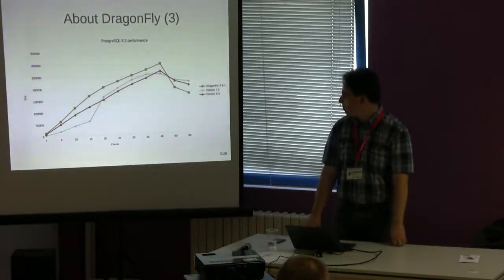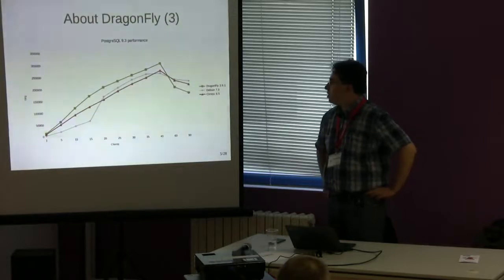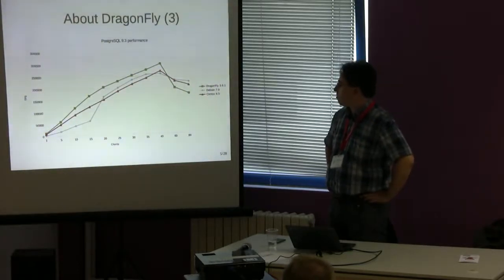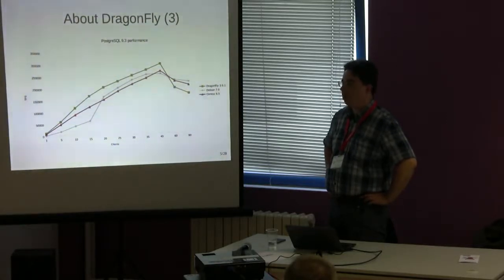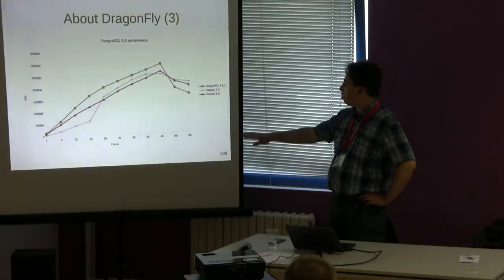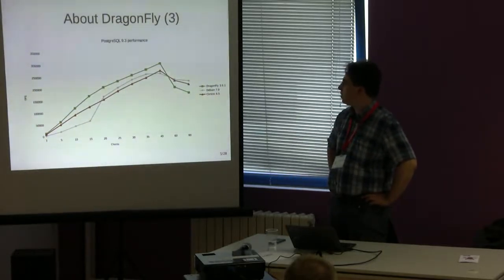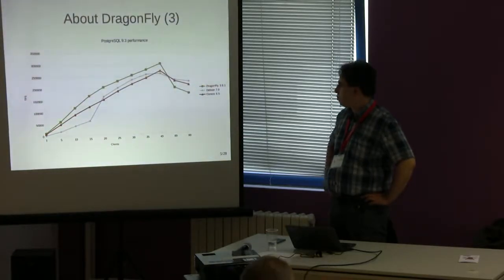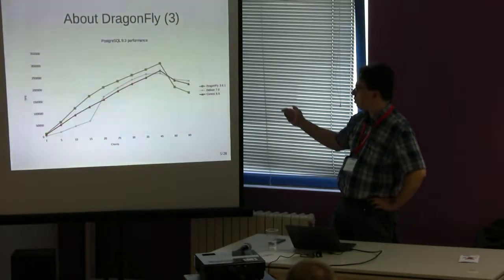A graph is better than many words, and you can see here the scalability of the system. This was a benchmark I ran on a dual Xeon system. On the horizontal axis you can see the number of Postgres clients, and on the vertical axis this is the number of transactions per second you get. I compared DragonFly with two competing Linux-based operating systems — DragonFly is the green curve.